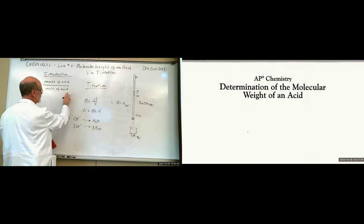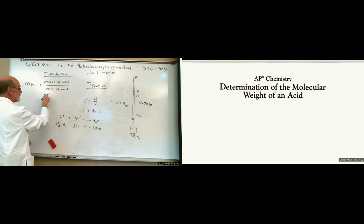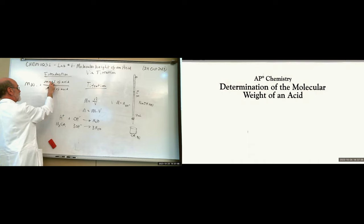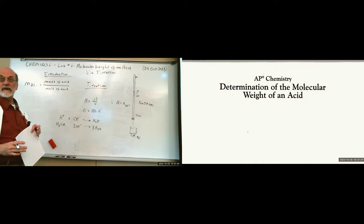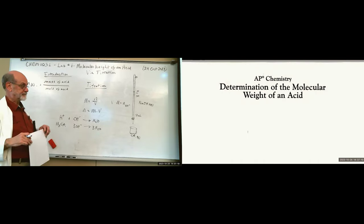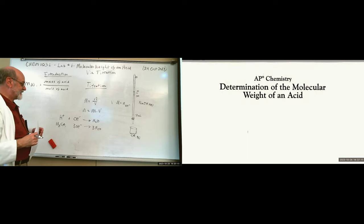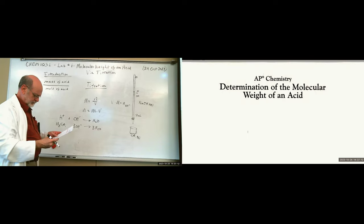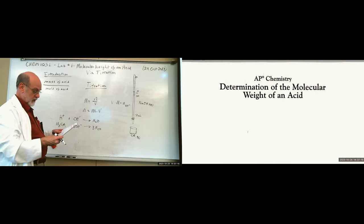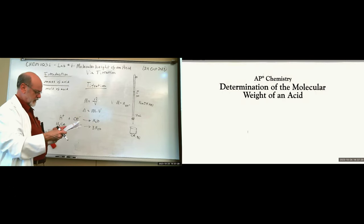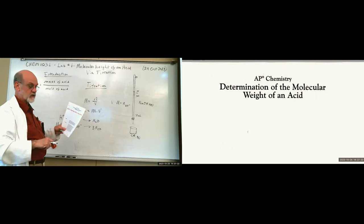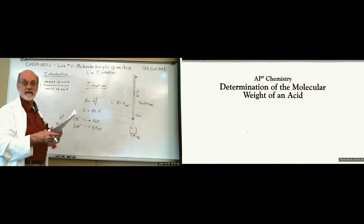Once you find the moles of the acid and you have the mass of the acid, you can calculate the molecular weight — molar mass. Your document gives you the balanced equation for citric acid and sodium hydroxide at the bottom of the first page.